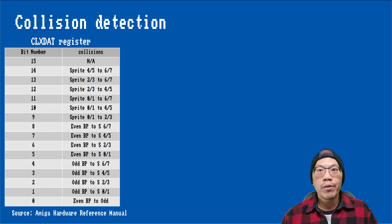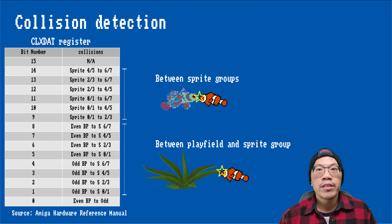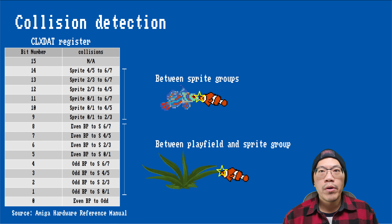Especially in games, it is important to know when objects collide with each other. The Amiga hardware provides a special register for that purpose named CLXDAT. It is convenient in that we can read the contents of this register and it will be automatically cleared after reading it. You can take all the combinations for collisions out of this table, and you can see which bits will be set depending on whether there are overlaps between sprites and or playfield graphics. Note that it does not allow you to detect collisions between sprites within the same group.